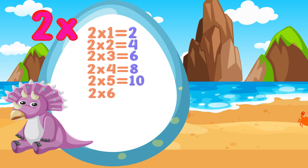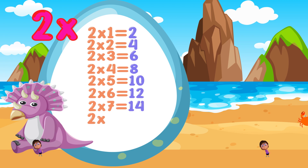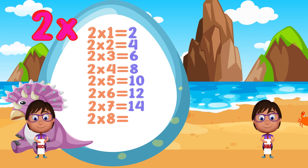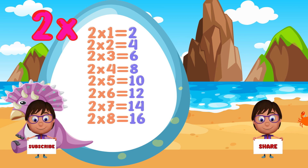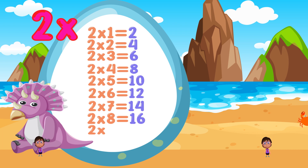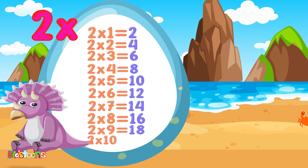2 times 6 is equal to 12. 2 times 7 is equal to 14. 2 times 8 is equal to 16. 2 times 9 is equal to 18. 2 times 10 is equal to 20.